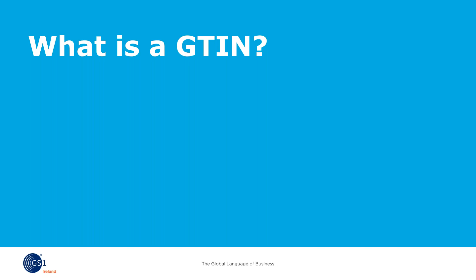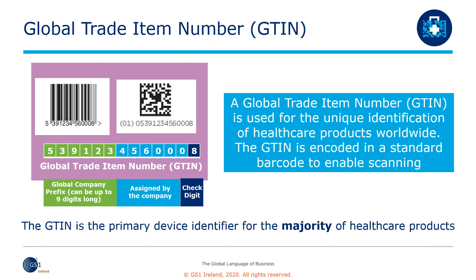GTIN stands for Global Trade Item Number and it is used for the unique identification of healthcare products worldwide. The GTIN is encoded in barcodes so that they can be machine readable by scanners. A bit of trivia: the first item scanned for sale by its barcode was over 45 years ago — a multi-pack of Wrigley's Juicy Fruit Gum.